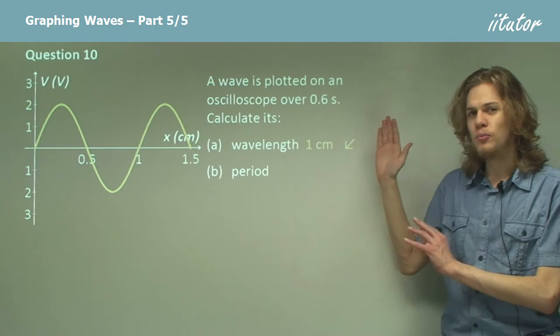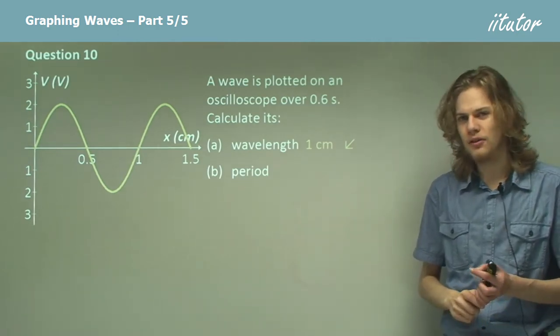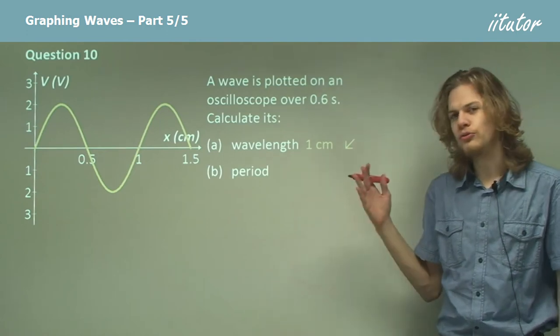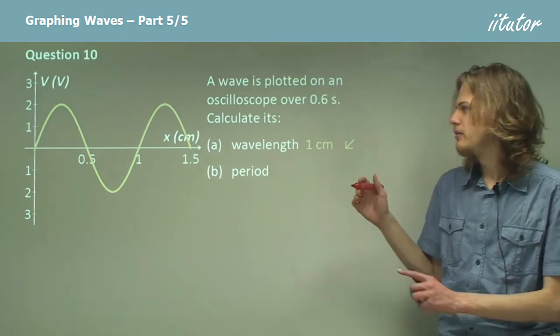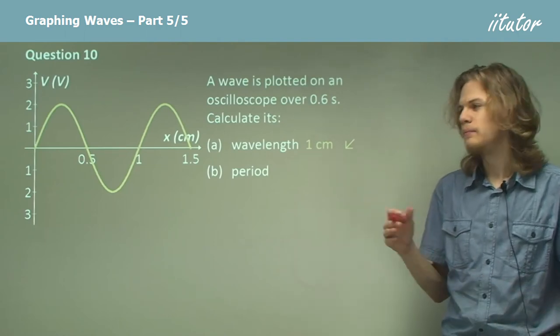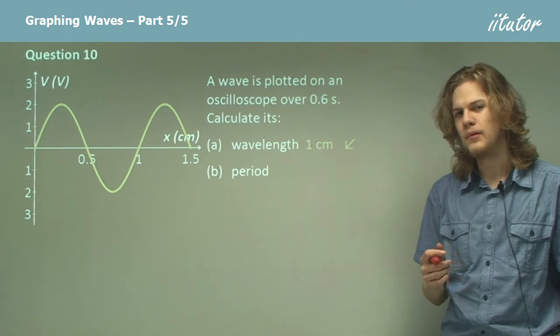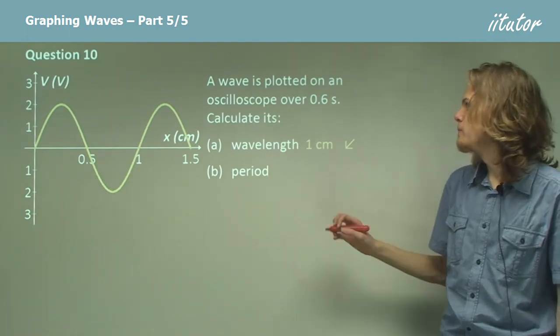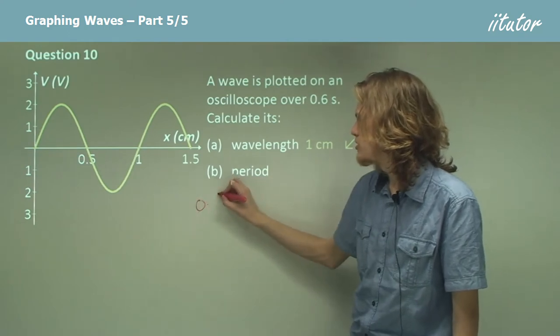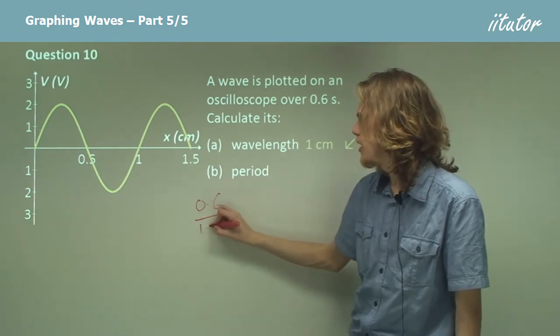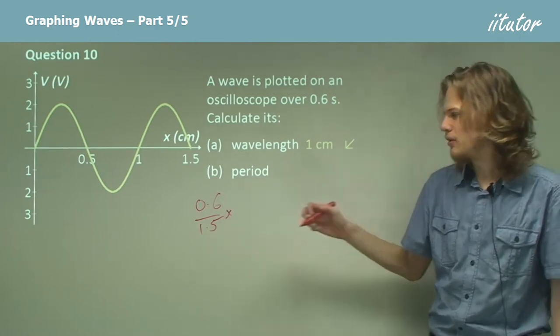So that means that over 0.6 seconds we get 1.5 wavelengths, and if we want to find its period then we need to figure out how long it would take for just one wavelength to go by. So essentially what we need to do is take 0.6 and divide it by 1.5 and then multiply it by one wavelength.